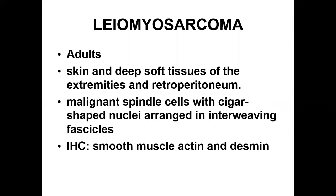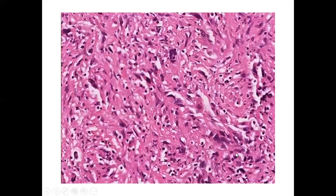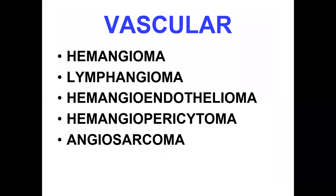Leiomyosarcoma is often seen in adults, in the skin and deep soft tissues of the extremities and retroperitoneum. They are composed of malignant spindle cells with cigar-shaped nuclei, arranged in interweaving fascicles. On immunostains, these are positive for smooth muscle actin and desmin. This figure shows leiomyosarcoma — there are fascicles of spindle-shaped cells, and some may be multinucleated with abnormal mitoses.